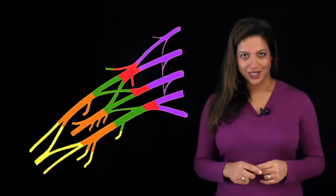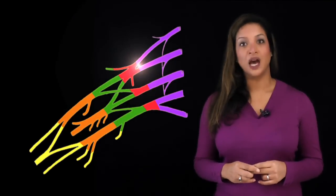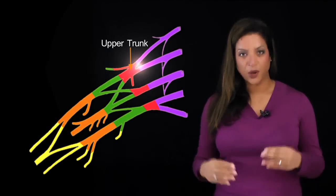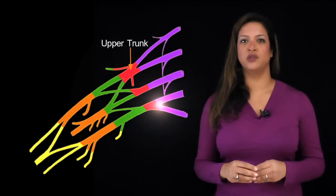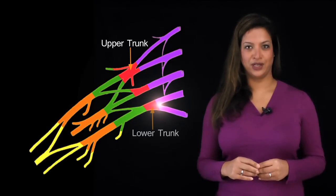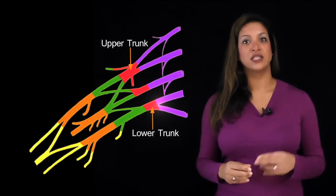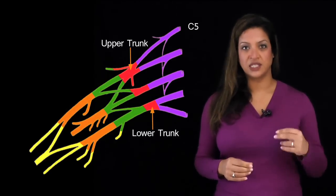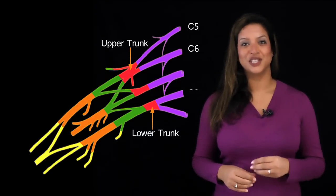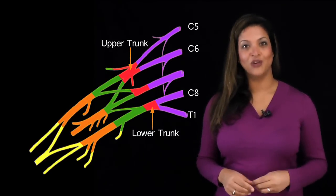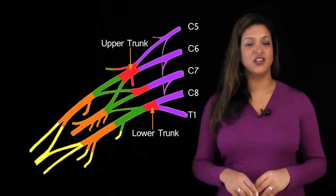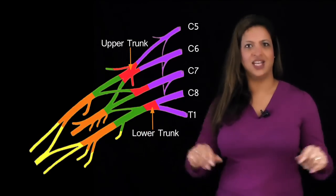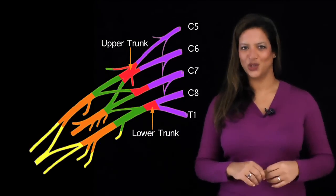So how do we get from the roots to the cords? The top two roots unite to form the upper trunk, and the bottom two roots unite to form the lower trunk. So C5 and C6 form the upper trunk, C8 and T1 form the lower trunk, and C7 is just fine on its own.